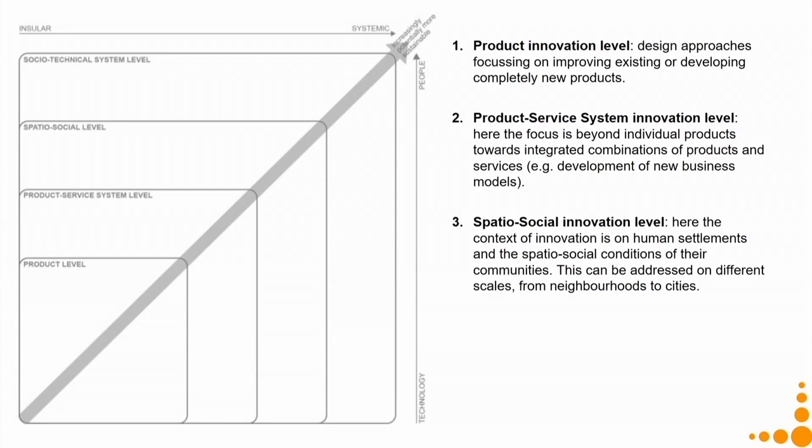The third level is spatio-social innovation, where the context of innovation focuses on human settlements and the spatio-social conditions of their communities. This can be addressed on different scales — neighbourhood, city, or district. The example of Varanapura, providing urban amenities in rural areas of the Varana district, illustrates spatio-social innovation: innovation was done at the human settlement level, considering the spatio-social conditions of the region, bringing in farm-related activities, innovations, and industries.